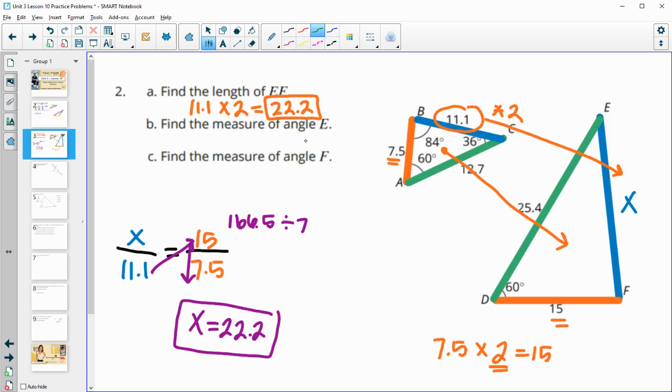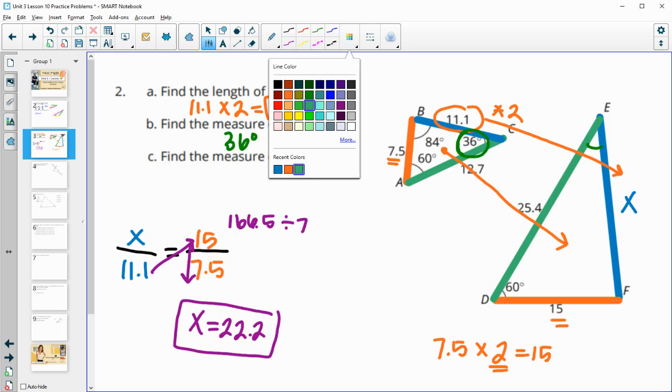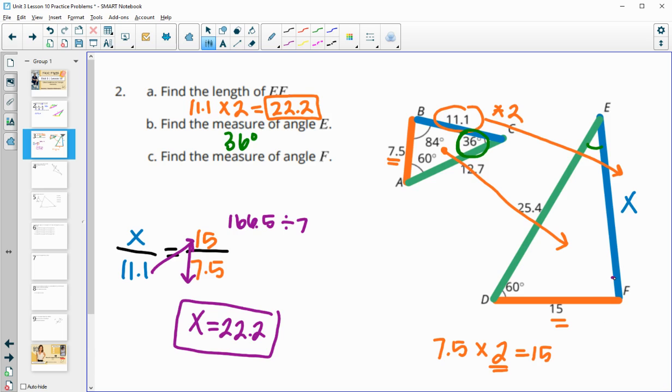Then it asks for the measure of angle E. So angle E is here between the green and the blue side. So that's going to match the one between the green and the blue side here, so 36 degrees. And then angle F is here between the orange and blue side. So between the orange and blue side here is this 84 degrees.